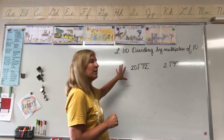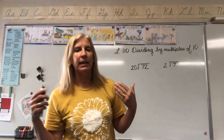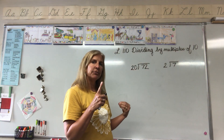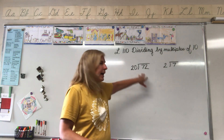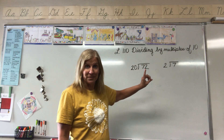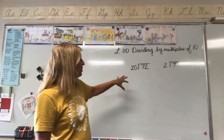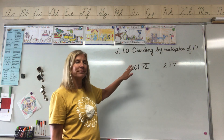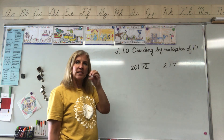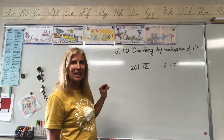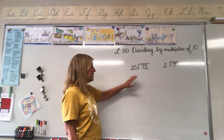All right, friends, page 509 in your book, lesson 110. We're talking today about dividing by multiples of 10. That might sound a little overwhelming and worthy of a silent freakout, but this is going to be way easier than you're probably thinking. When we multiply by multiples of 10, we often remove the zero, multiply, and then put the zero back on.